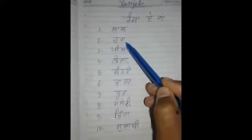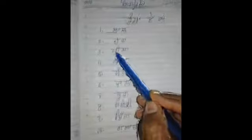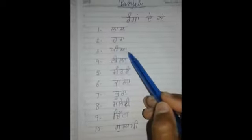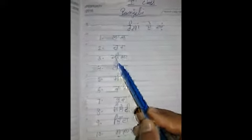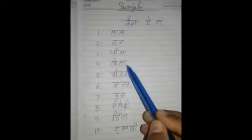Next color is Pela. P, Pappi Biyari P, Lalli nukanna La, Pelaa. Next is Neela. N, Nannye Biyari Ni, Lalli nukanna La, Neelaa.